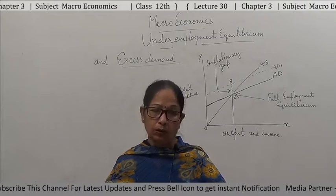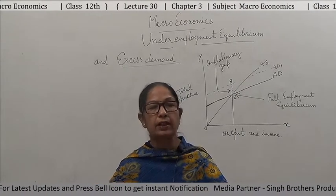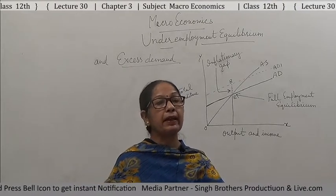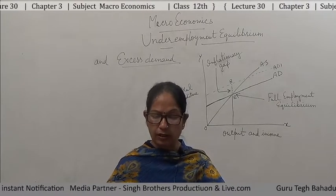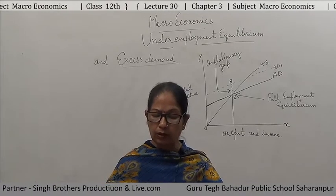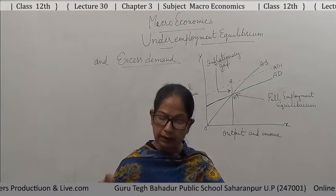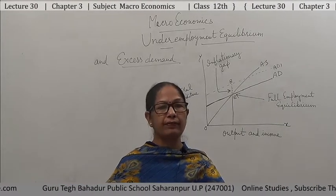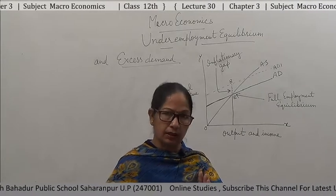How to control the situation of excess demand? This situation can be rectified by reducing aggregate demand — we need to reduce the aggregate demand level to control the inflationary situation and control excess demand. We need to reduce demand by an amount equal to the inflationary gap. Two most important measures are fiscal policy and monetary policy, which we will explain now.